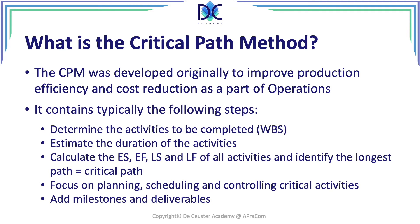When we look at the critical path method, we typically follow these steps: first, identify all activities to be completed by creating the WBS — the work breakdown structure. The lowest level of the WBS is the work package, which must be further decomposed into activities. We then estimate activity durations, establish their dependencies, and calculate the early start, early finish, late start, and late finish of all activities to identify the longest path — the critical path.